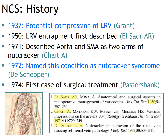Let's look at the history of this syndrome. In 1937, Grant's anatomy book described potential compression of the left renal vein. In 1950, the terminology of left renal vein entrapment was first used. In 1971, the aorta and superior mesenteric artery were described as two arms of a nutcracker. In 1972, Shepherd named this condition nutcracker syndrome, and in 1974, the first case of surgical treatment was reported.